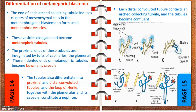The metanephric tubules also differentiate into the proximal convoluted tubule, the descending and ascending parts of the loop of Henle, and the distal convoluted tubule. These structures — the proximal convoluted tubule, loop of Henle, and distal convoluted tubule — are all derived from the metanephric blastema, whereas the collecting tubules are derived from the metanephric diverticulum.